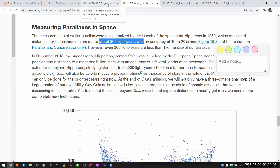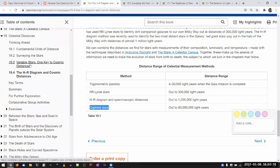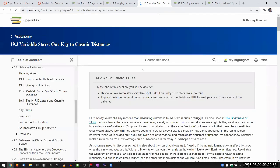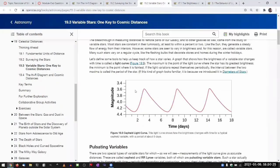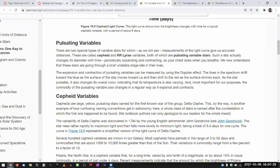And the method using the variable stars, that's what RR Lyra and Cepheid stars are referring to, that's covered in section 19.3. So, this is a kind of a summary question. You need to have looked at these sections and have some sense of these to answer this one question.